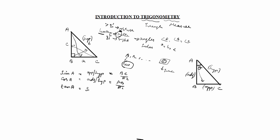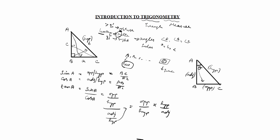For tan, the formula is sin A divided by cos A. Sin A is opposite by hypotenuse, and cos A is adjacent by hypotenuse. So opposite by hypotenuse divided by adjacent by hypotenuse — the hypotenuse cancels — giving opposite by adjacent as tan A. So tan A equals BC by AB.